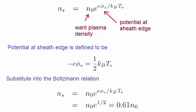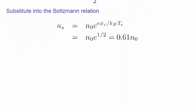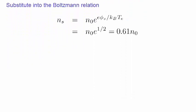You'll notice that the density, Ns, at the sheath edge is 0.61 the density in the main body of the plasma, N0. Although we can leave the relationship as this, that is, 0.61 multiplying N0, it's not really very convenient.